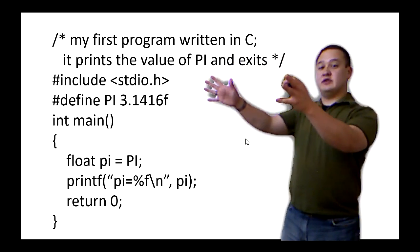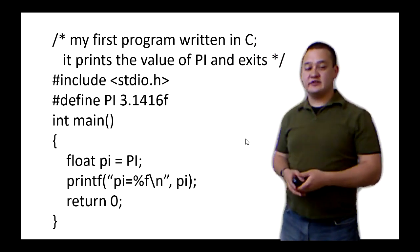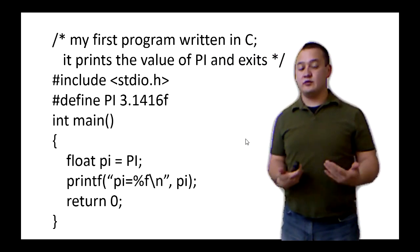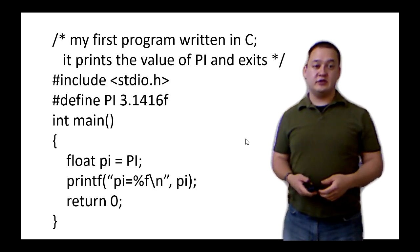So this is a code. This is some program code. It's a very simple code that's going to print the value of pi, 3.1416, onto the screen or into the terminal.